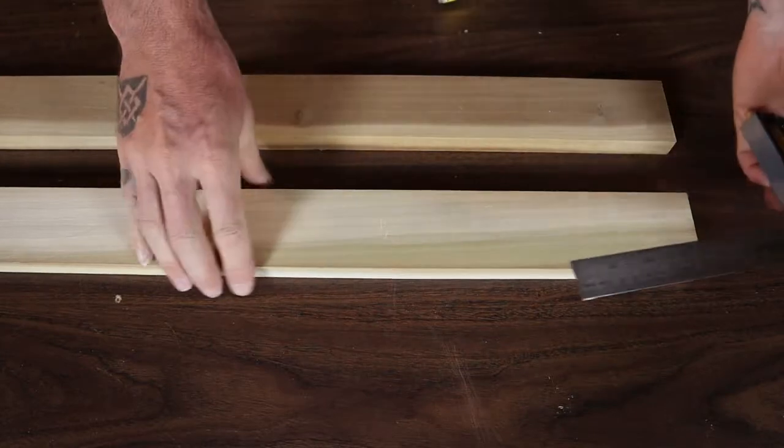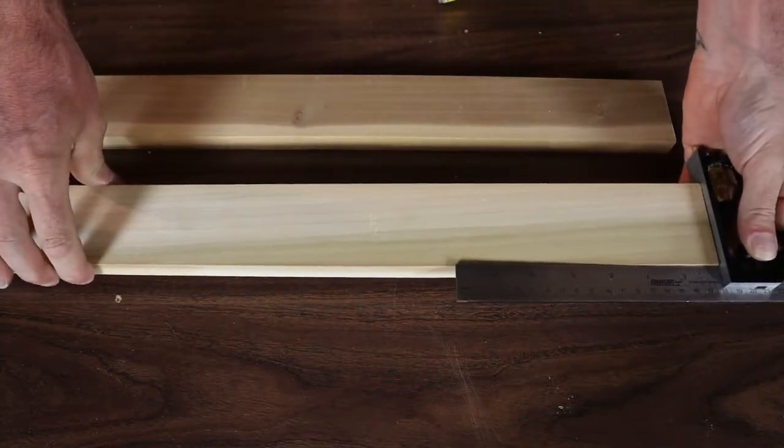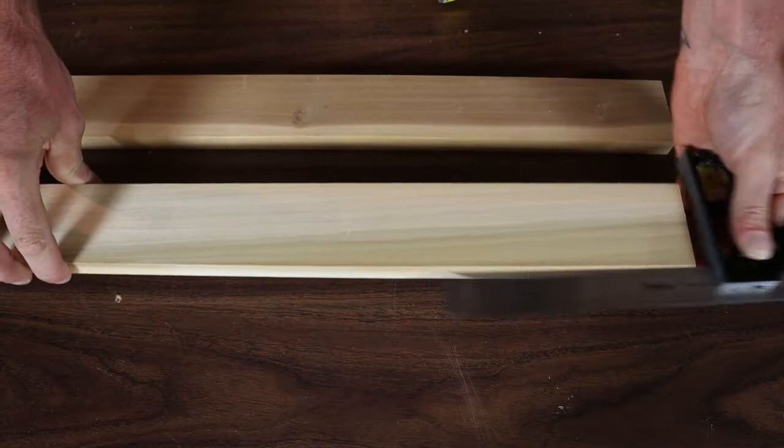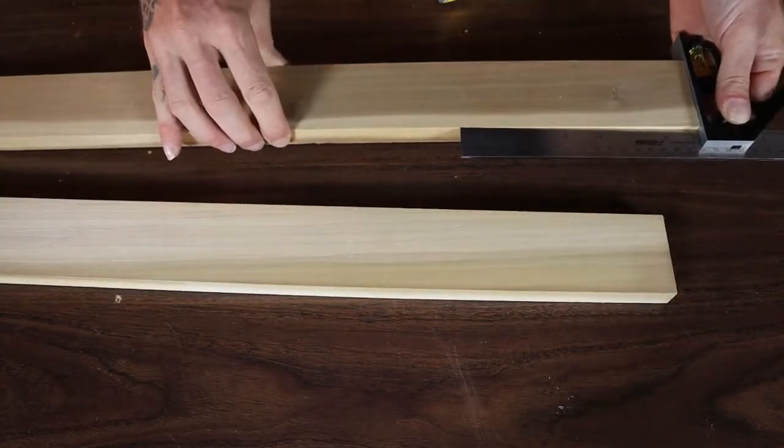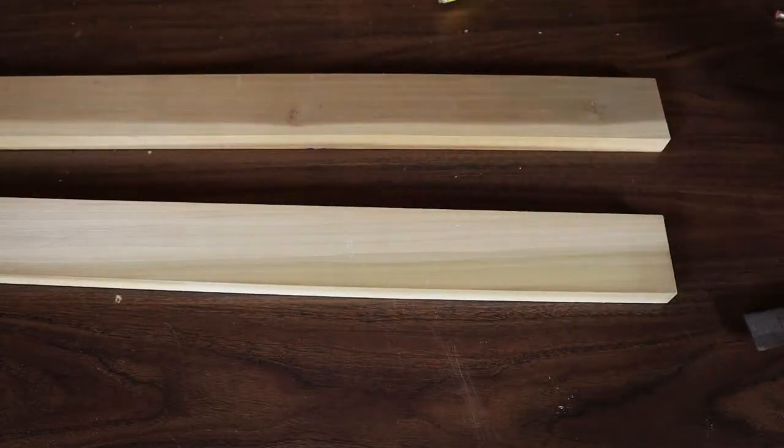So you're definitely going to want to make sure if you bought just straight stock that the ends are square. If they're not, the first thing you're going to want to do is cut one straight line on one end to begin with.